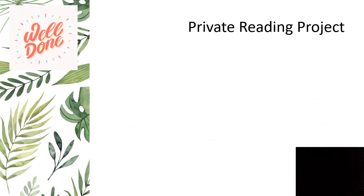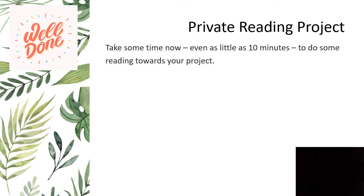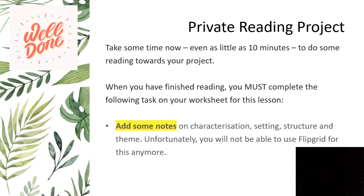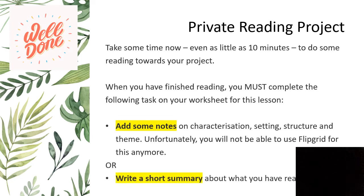The final task for this lesson is towards the private reading project. Take some time — even as little as 10 minutes — to do some reading towards your project now. When you've finished reading, there's a task at the bottom of the worksheet where you must add notes on characterisation, setting, structure and theme. We're no longer able to use Flipgrid, so you'll be doing this on the sheet and making notes on OneNote going forward. Alternatively, depending on your worksheet, you may be asked to write a short summary of what you have read. That is the end of today's lesson — well done, and we'll see you next time for the lesson on informal language.